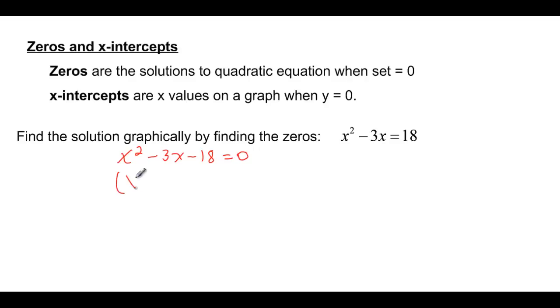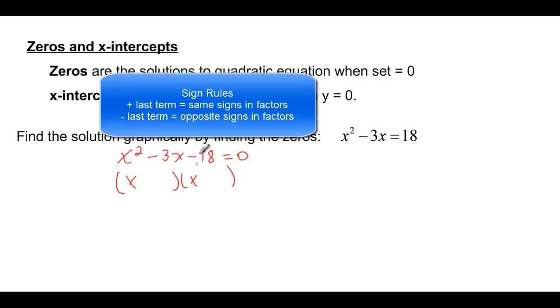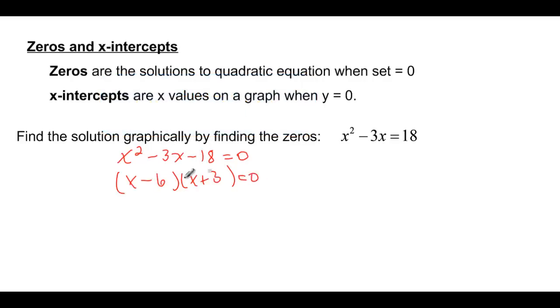And then I would take x and x, and factors of 18 that would add up to 3, or subtract to 3 since they're going to be opposite signs here. This negative 18 would be a negative 6 and a positive 3, and then you could set those equal to zero. x minus 6 equals zero, so x equals positive 6, and x plus 3 equals zero, so x equals negative 3.